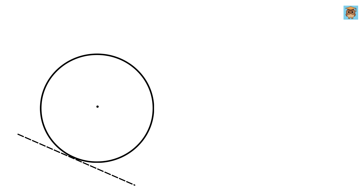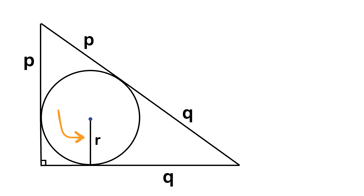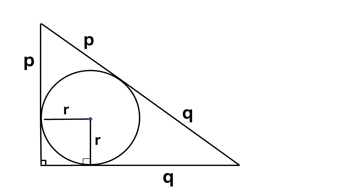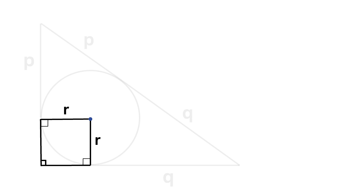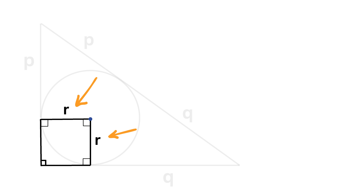The important property of a tangent is that it is always perpendicular to the radius at the point of contact. Drawing radii to each tangent side gives us 90-degree angles. Combined with the existing right angle, all four angles of this quadrilateral are 90 degrees, making it a square of side length r.